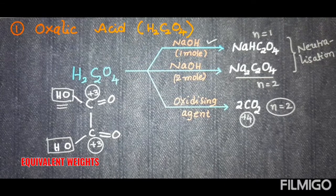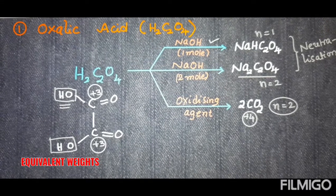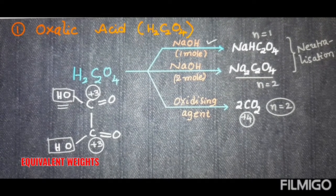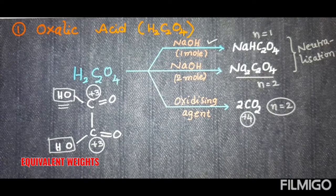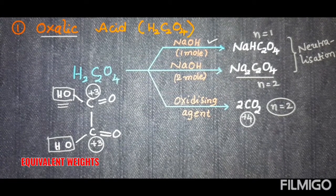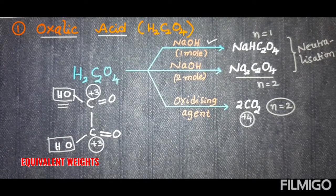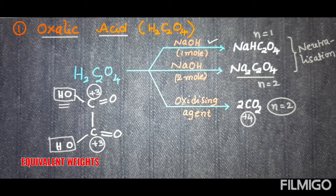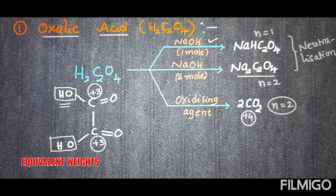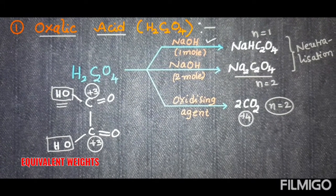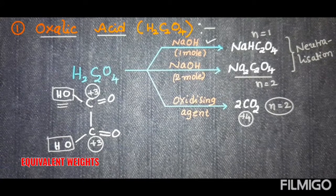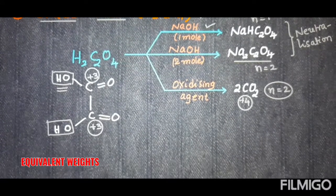Since there are two carbons, the total number of electrons involved is two, therefore n = 2. So depending on the reaction conditions, the n-factor of a molecule will change — oxalic acid's formula remains the same whether it reacts with an oxidizing agent or a base, but its n-factor is decided by the reaction. This is one example; now I will take one more of a different style.